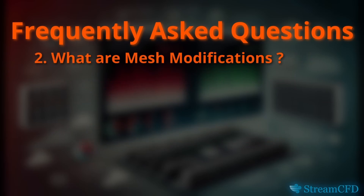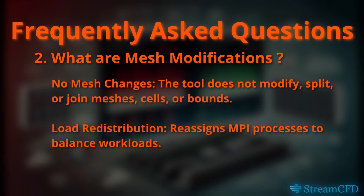Two: does this tool modify, split, join meshes, cells, or bounds? No. It only redistributes the load by reassigning MPI processes. You no longer need to worry about splitting meshes or alignment problems — mesh once and run on any CPU or MPI count. However, we do have plans to add mesh splitting in upcoming versions.